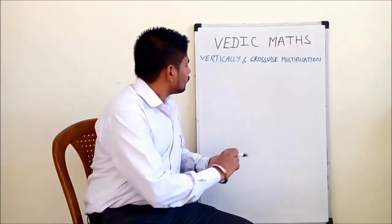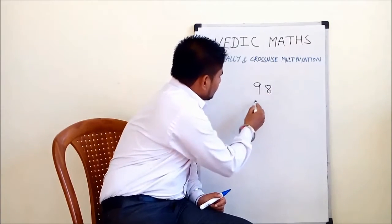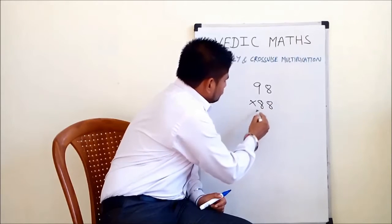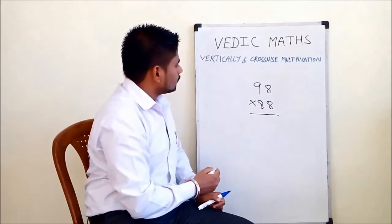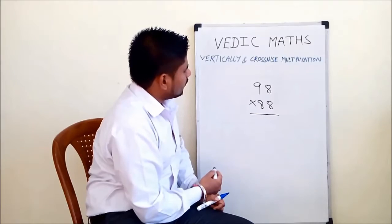Here is an example. For example, if we multiply 98 into 88, 98 is close to 100 and 88 is close to 100.